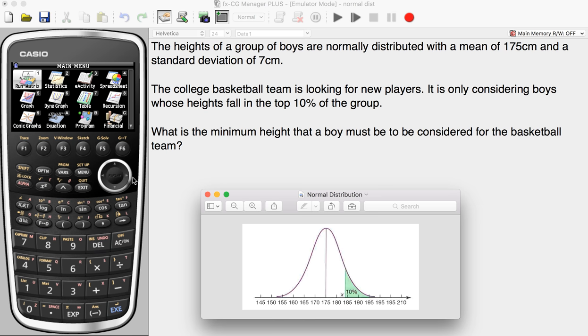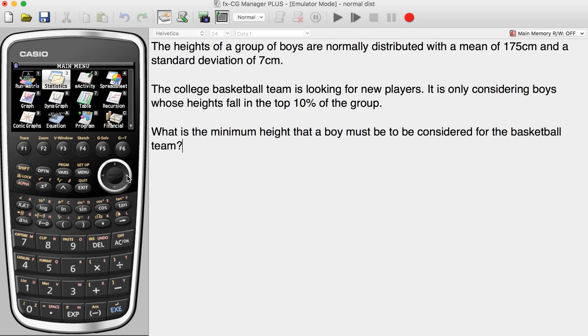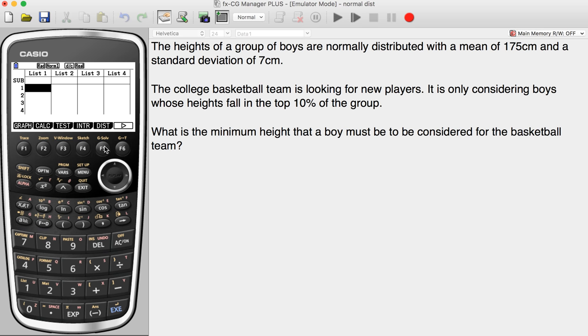Let's move over to the calculator. Just like before, we go to statistics, distribution, and normal. This time we're going to press F3. We're going to use the inverse normal, and we want variable to be the top entry, or data.